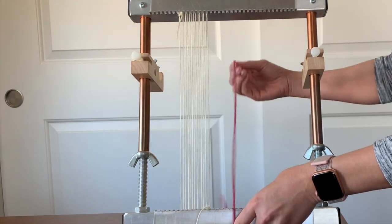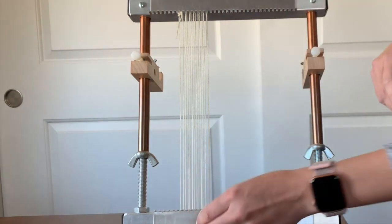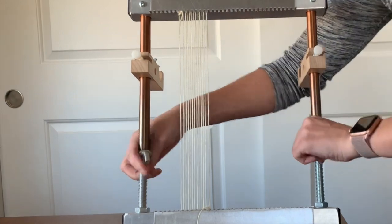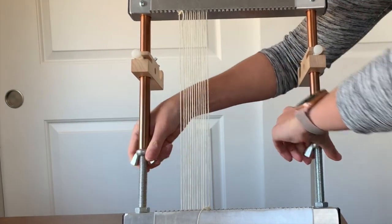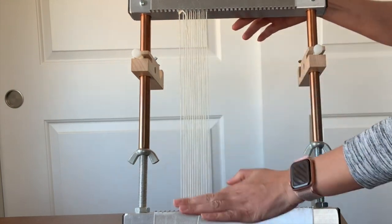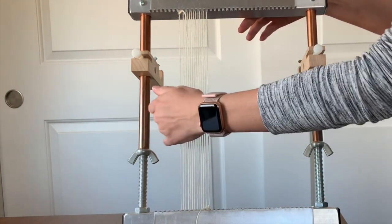And then we can remove the string that we put on and we can tighten our tension by again turning the wing nuts in a counterclockwise way. And that is it.